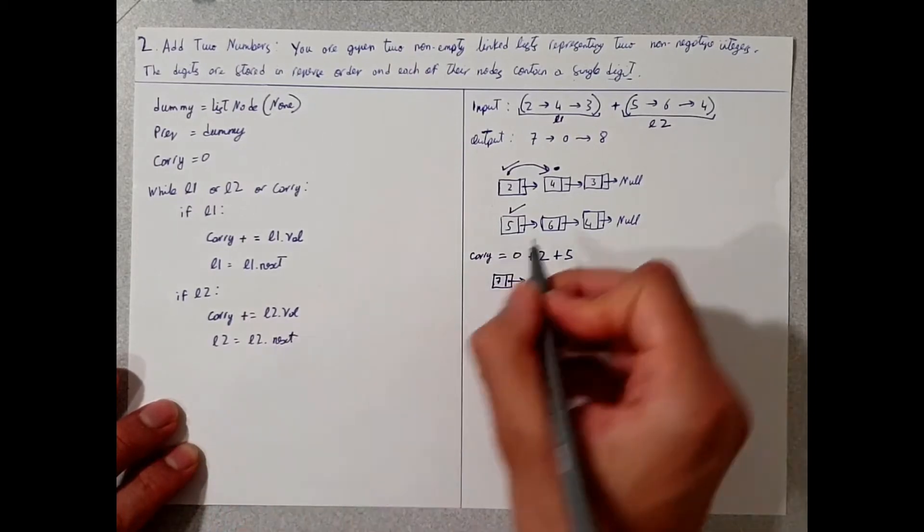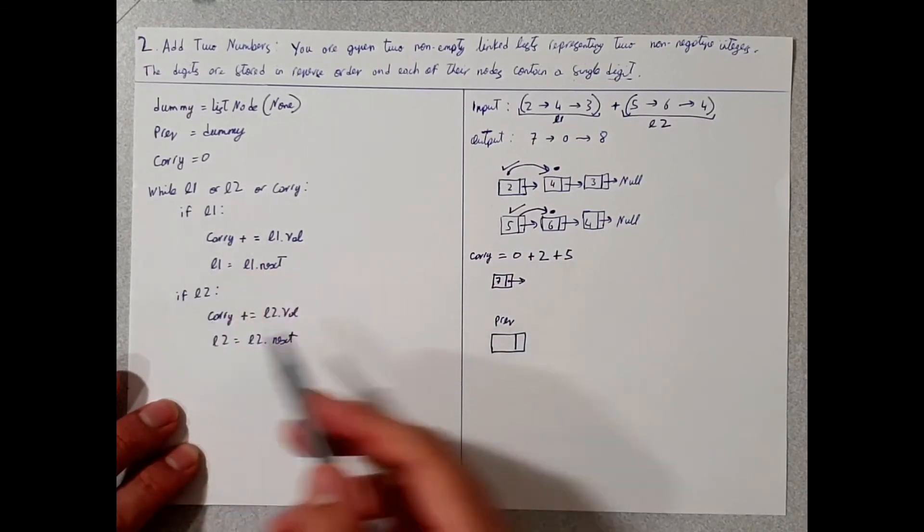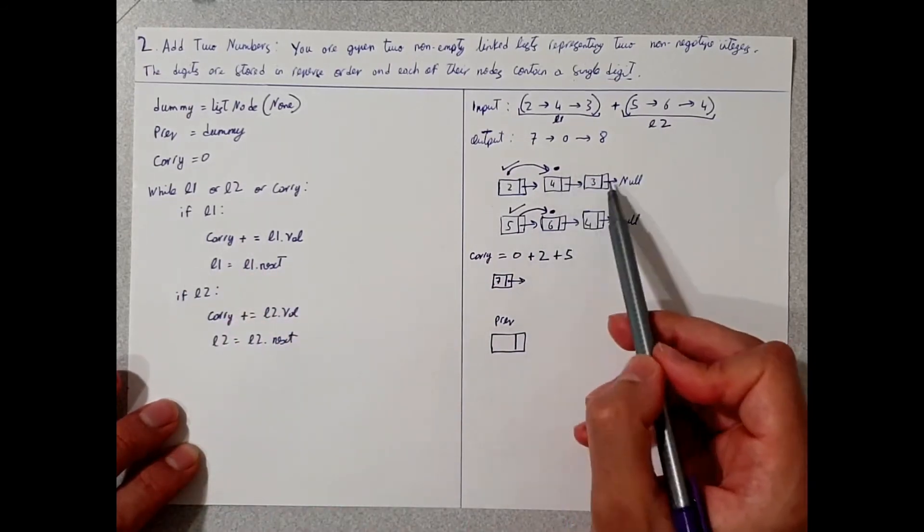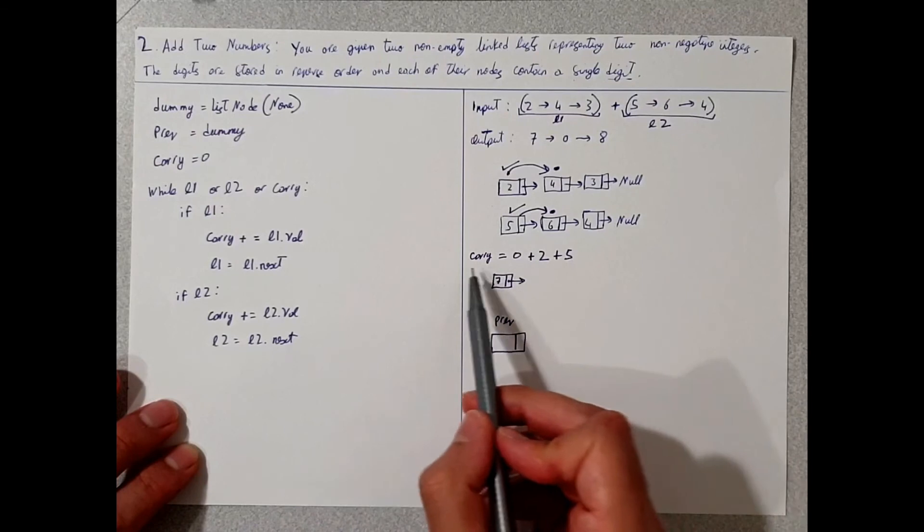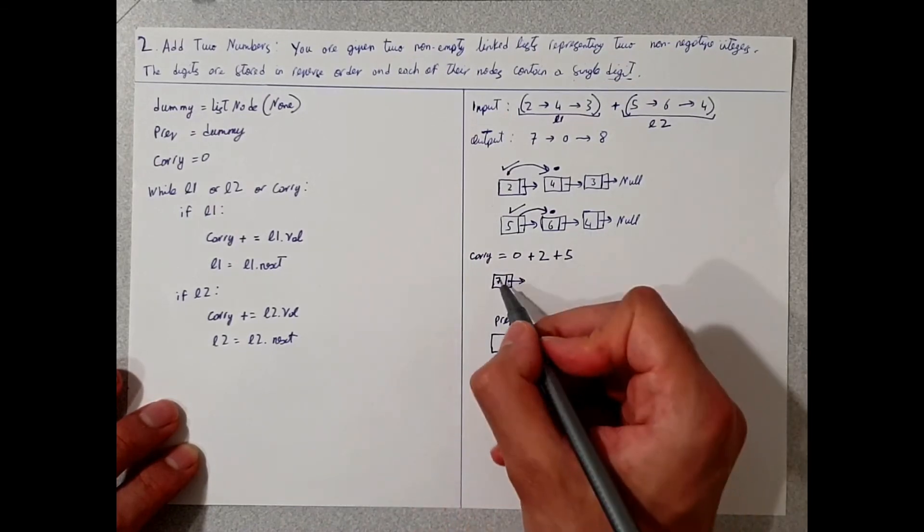So L2 is now here. So as this loop goes over, it's going to add the value to carry and go to next. But now we have a value here at carry, which is equal to seven.